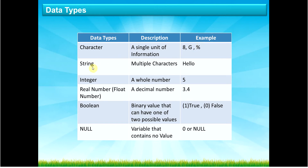Moving on to string — string differs from character in that it is multiple characters together. The word 'hello' is five characters. A lot of people make the mistake of thinking strings can only contain alphabetical characters — I'll cover that in more detail in a moment. The integer is easy: it's just a whole number such as five, fifty-four, or two hundred and five — whole numbers with no decimal place. A real number, also known as a float, is a number with a decimal place, such as 3.4 or pi (3.142).